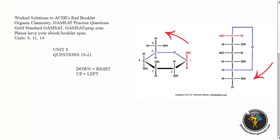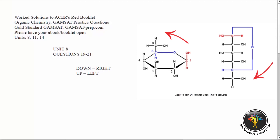For question 19, look at answer choice A. Look at the carbon that has the CH2OH group attached and go one carbon above — you'll see there's an OH on the left and a hydrogen on the right. The third carbon from the top in answer choice A has OH on the left and H on the right.